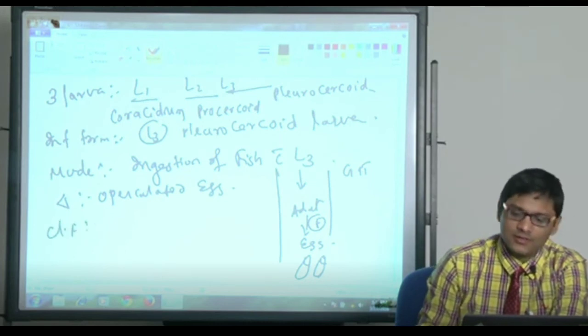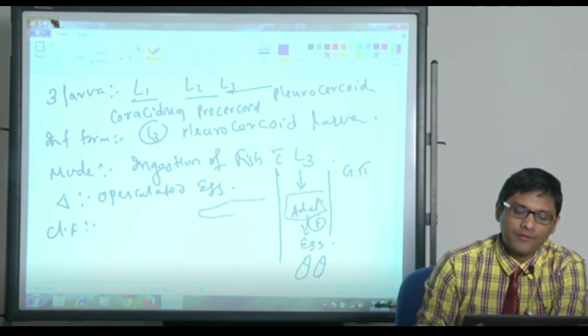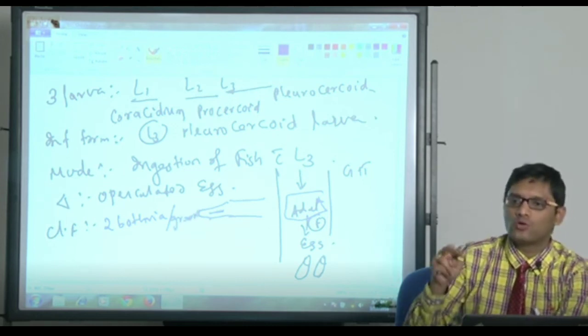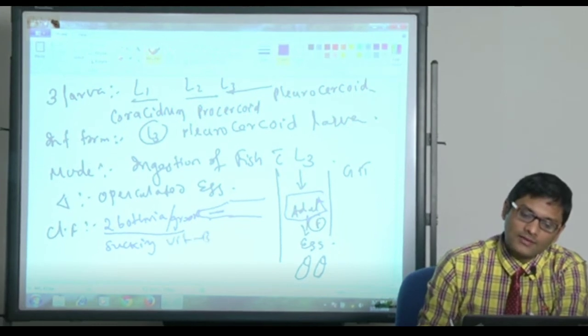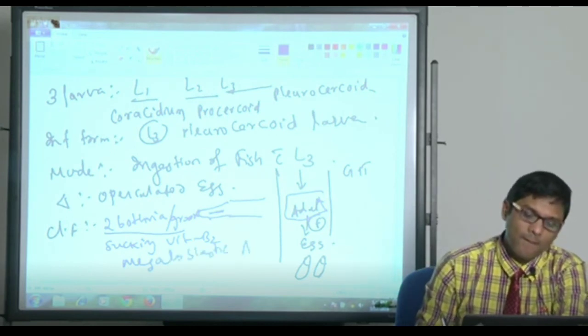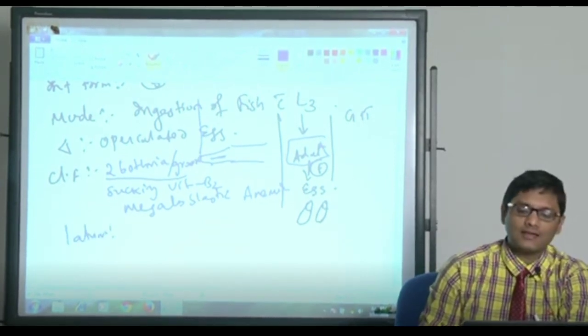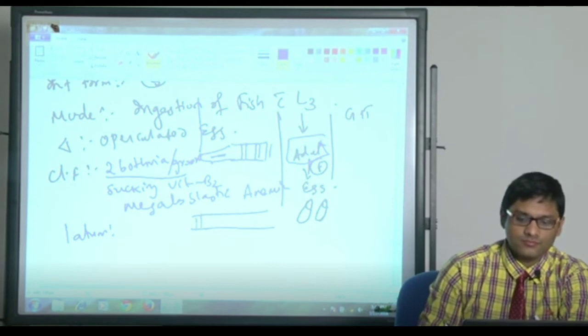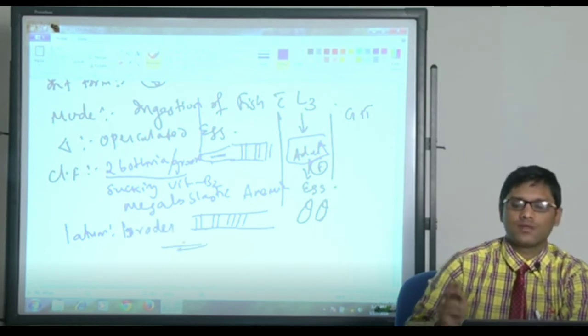The main clinical feature - why is it called Diphyllobothrium? Because the adult head end has two bothria or grooves. Both sides there are two grooves in the head and this bothria is responsible for sucking vitamin B12 from the intestine and that leads to megaloblastic anemia. Why is it called latum? Latum means broader. The segments, each segment is broader than longer. Hence it is called latum.